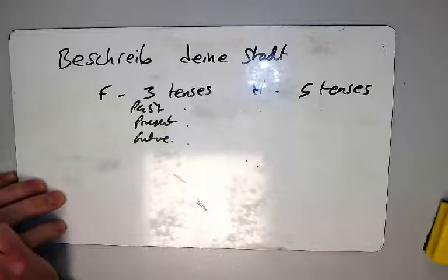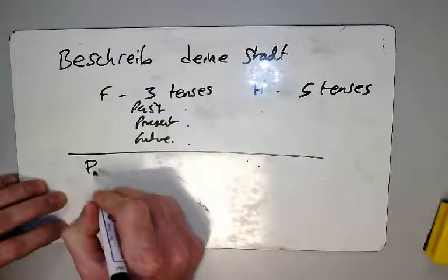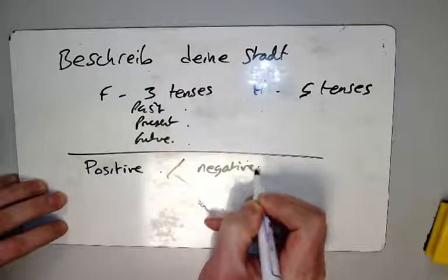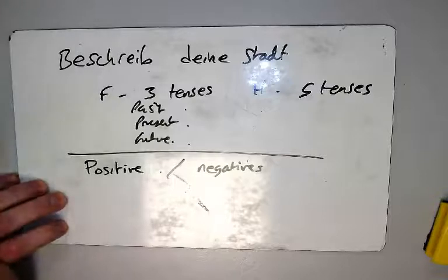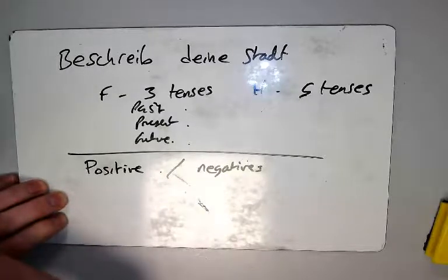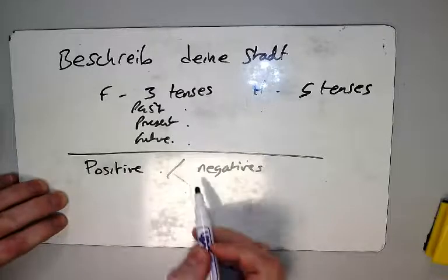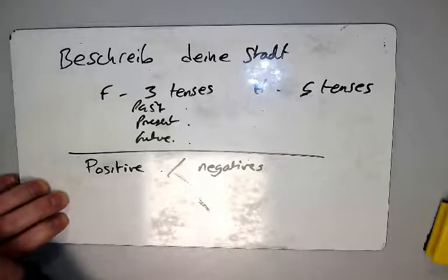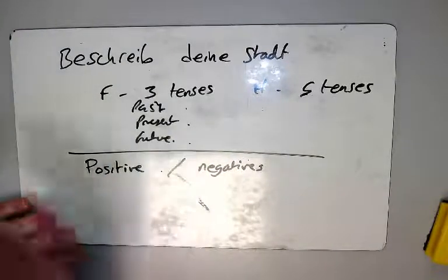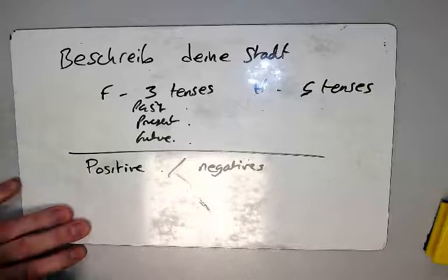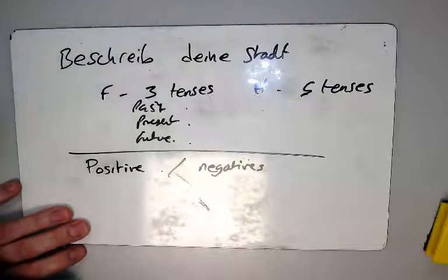We need to be including lots of opinions — thinking about positives and negatives and trying to get a balance. For example, describing your town: in my town there are lots of shops and that is great because I love shopping. However, there is also lots of homelessness and litter on the streets and it is very dirty. You could also bring in a personal example from yesterday — like 'yesterday I went swimming with my friends in town and it was great.'